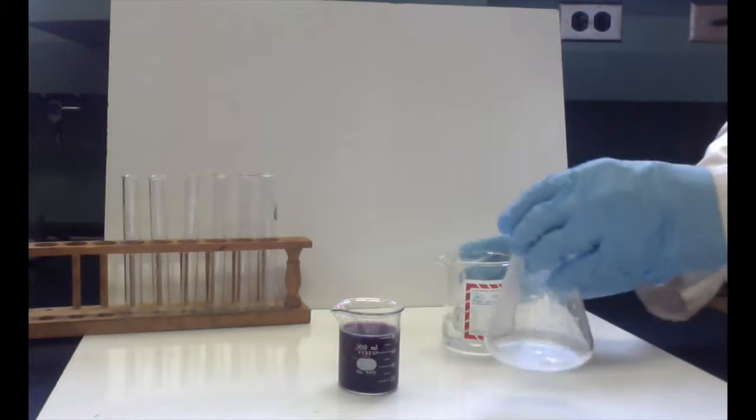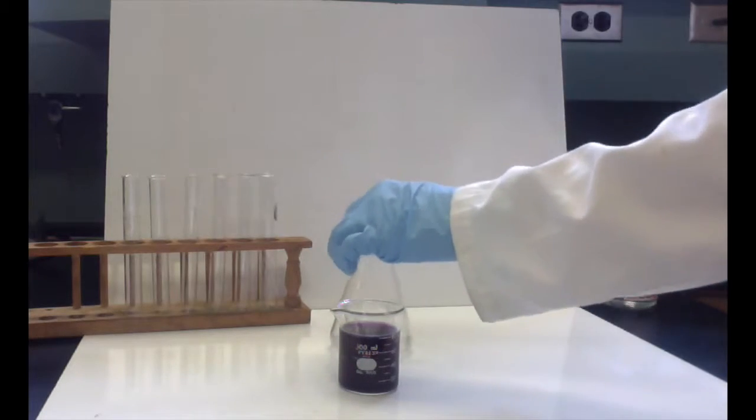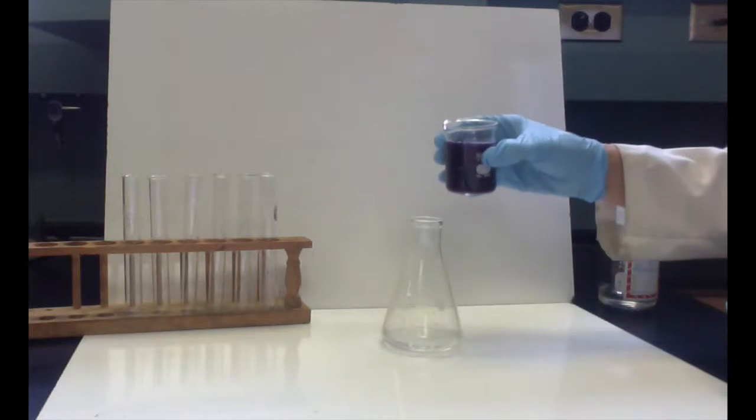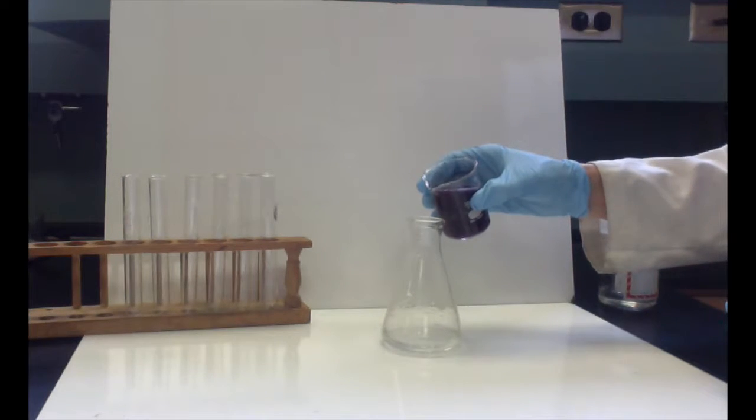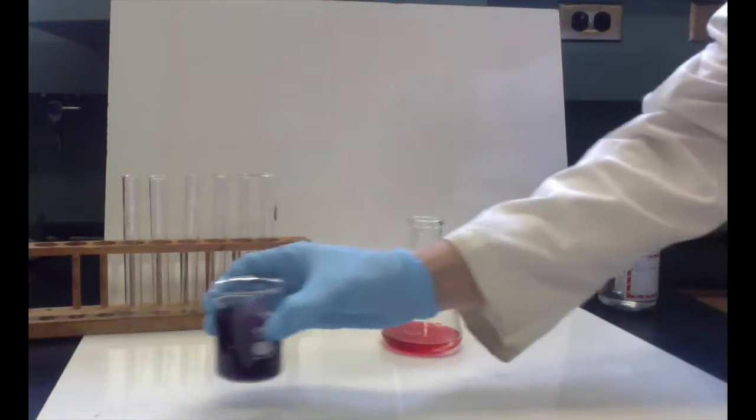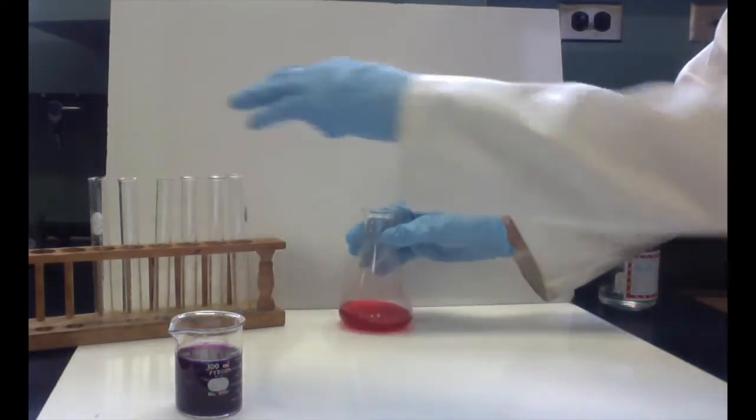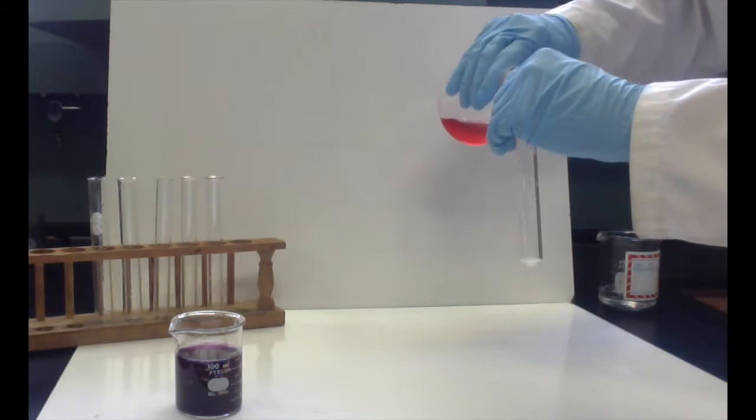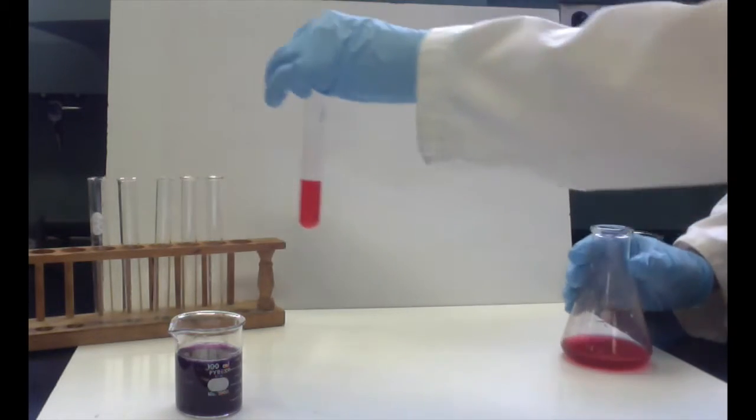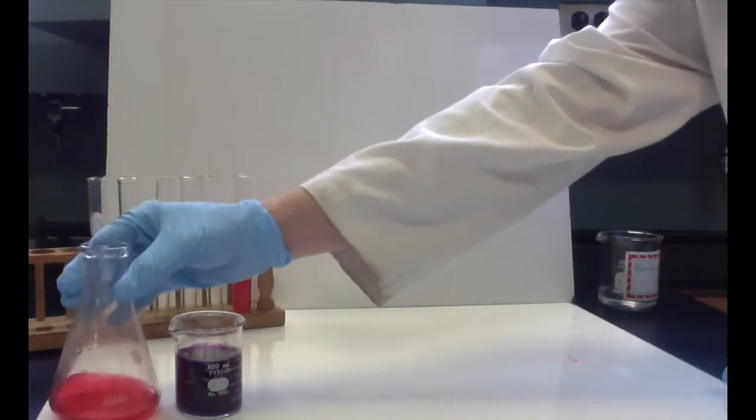When we take our hydrochloric acid, it's clear and colorless. When we add a little bit of the cabbage juice, it becomes bright red. So let's put that into this test tube here. See how red that is? This would be a very low pH. That's our hydrochloric acid.